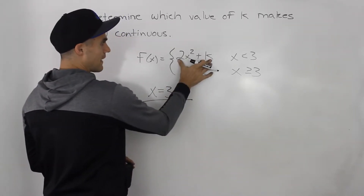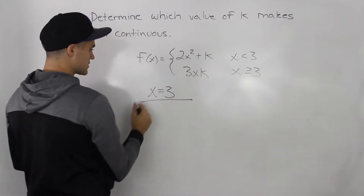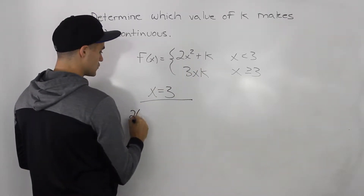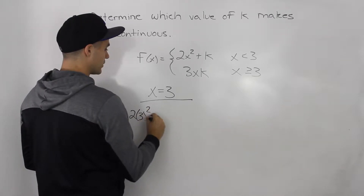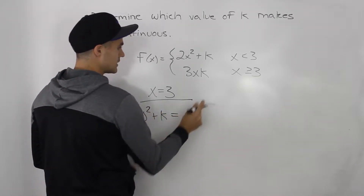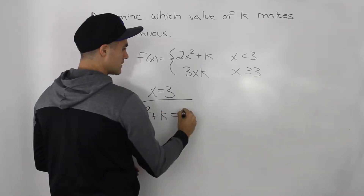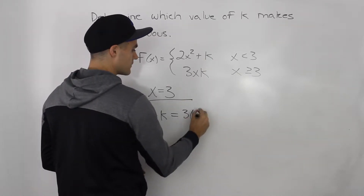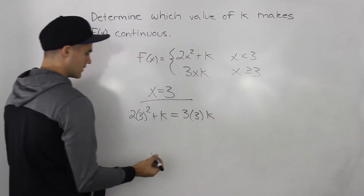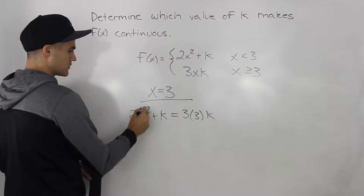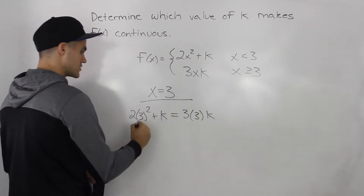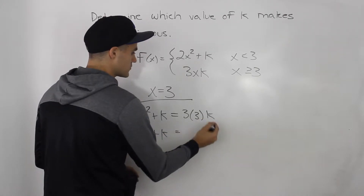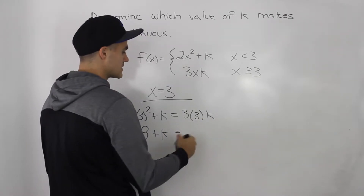So the y-value at an x-value of 3 — basically the y-value of this leg, which would be 2 times 3 squared plus k — has to equal the y-value of this leg at that x-value of 3. So 3 squared is 9, times 2 is 18. 18 plus k has to equal 3 times 3 times k, which is 9k.